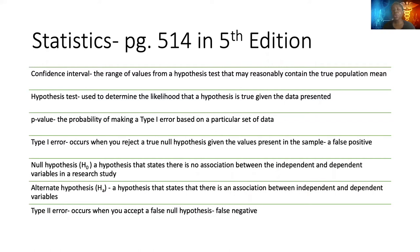P-value is also very important to understand. A p-value is simply going to be the probability of making a type 1 error. When you're doing a hypothesis test, you're going to have two possible conclusions: something called the status quo, or a result where you don't fit or get the results of the status quo.